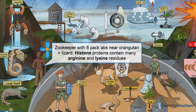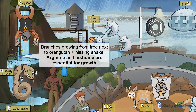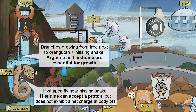Let the zookeeper remind you that histone proteins contain many arginine and lysine residues. Arginine is essential for cellular growth because it specifically stimulates the release of insulin-like growth factor, or IGF-1. Histidine's side-chain pKa is a lot lower than lysine's and arginine's, so it's neutral at body pH. However, histidine can accept a proton, which is why it's considered a basic amino acid. Just like arginine, histidine is needed for cellular growth, especially in children, during pregnancy, and in anyone who's recuperating from trauma.